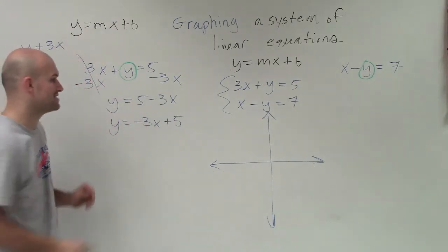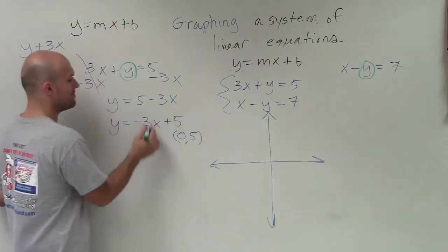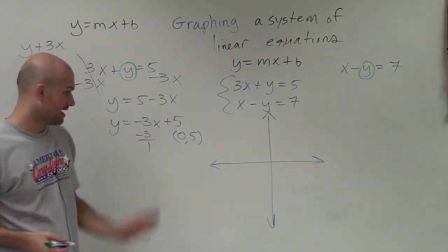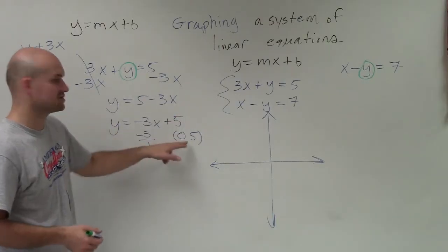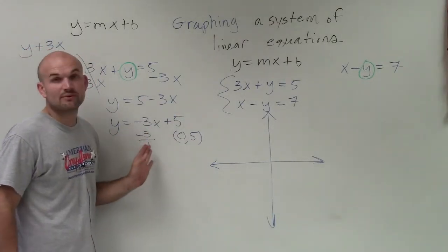Now I have an equation where I know my y-intercept is at 0 comma 5. And my slope is at negative 3 over 1, right? Because remember, b is your y-intercept, which is a coordinate point, and slope is your rate of change, which we write as a fraction.